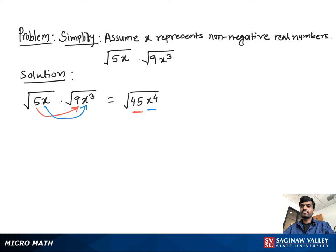Then we simplify the square root 45x to the fourth. First we find the perfect square factor of 45, which is square root 9 times square root 5. Then x to the fourth as x square all to the second power.